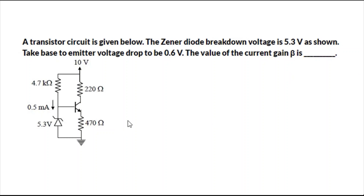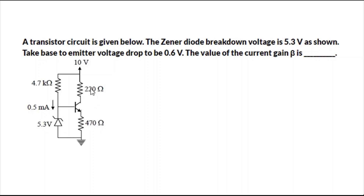In this video I will show how to solve a BJT (bipolar junction transistor) question. The transistor circuit has a Zener diode in the feedback path along with some resistances. The question gives the Zener diode breakdown voltage as 5.3 V and asks us to calculate the current gain beta (β = IC/IB). The circuit has RC = 220 Ω, RE = 470 Ω, and a feedback resistance of 4.7 kΩ.